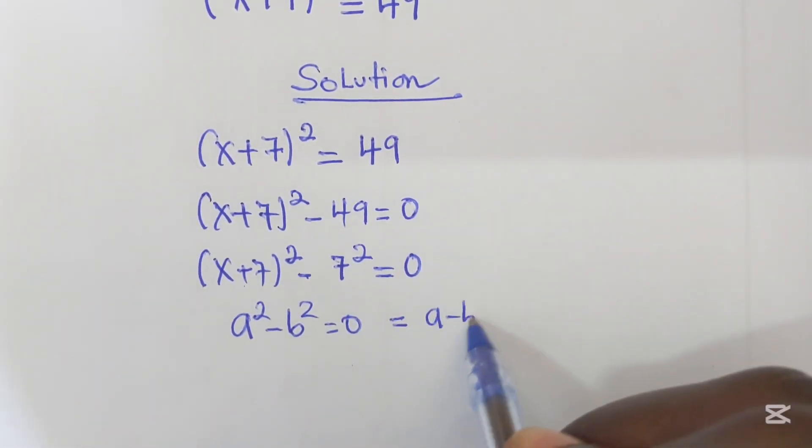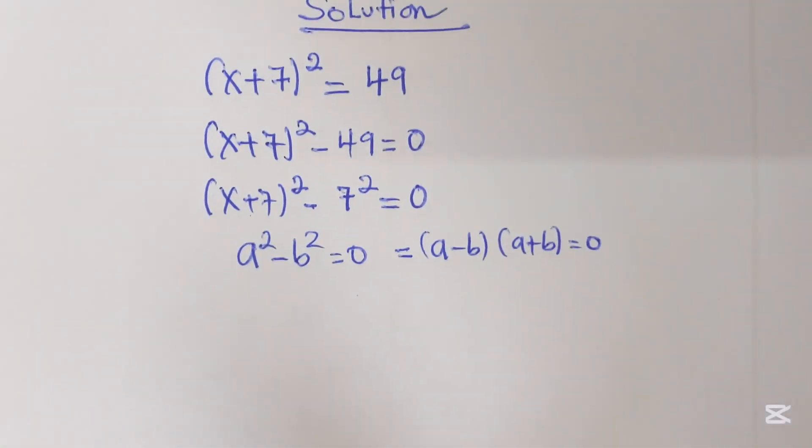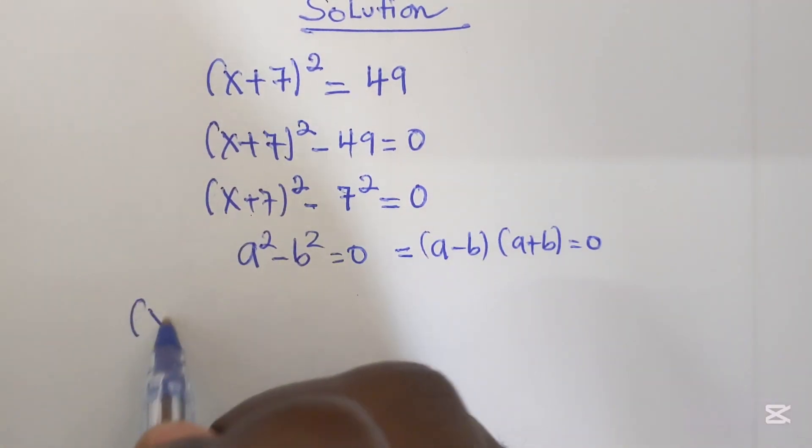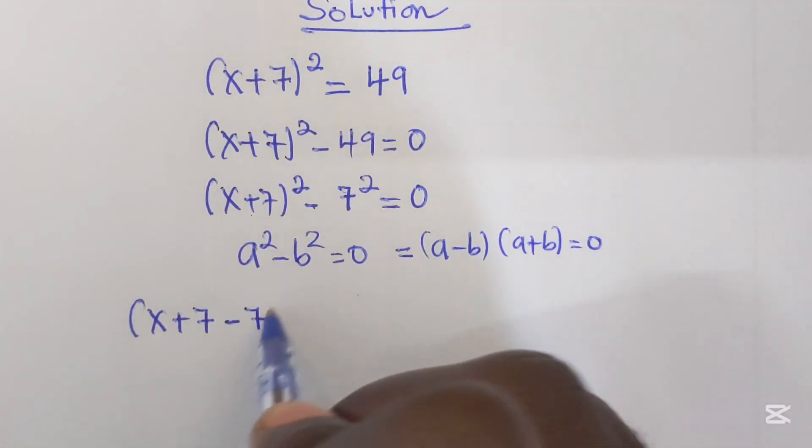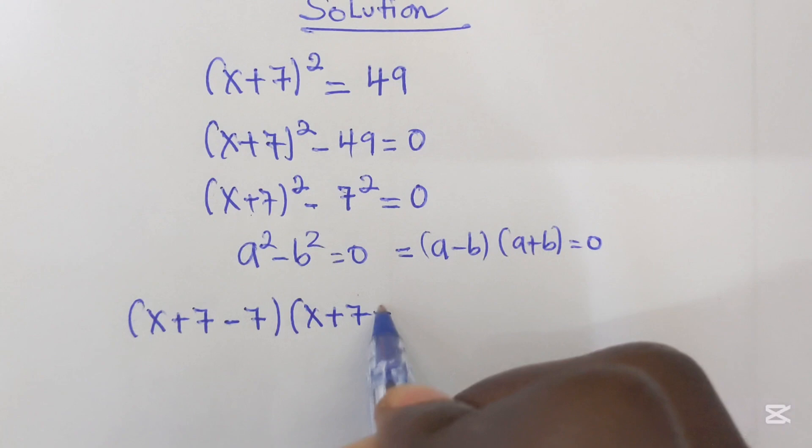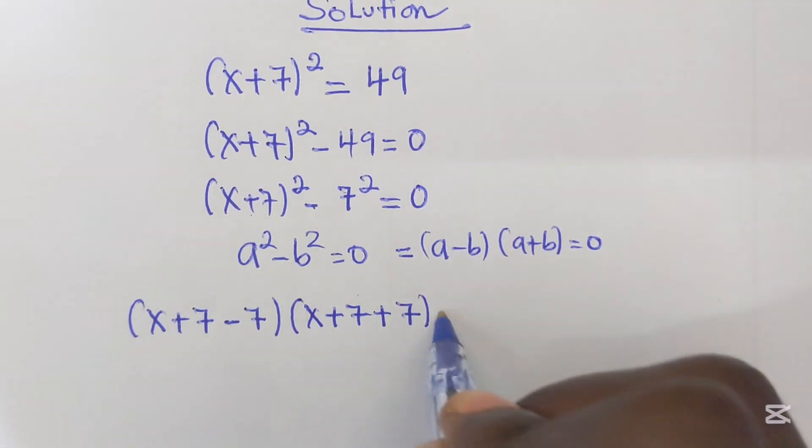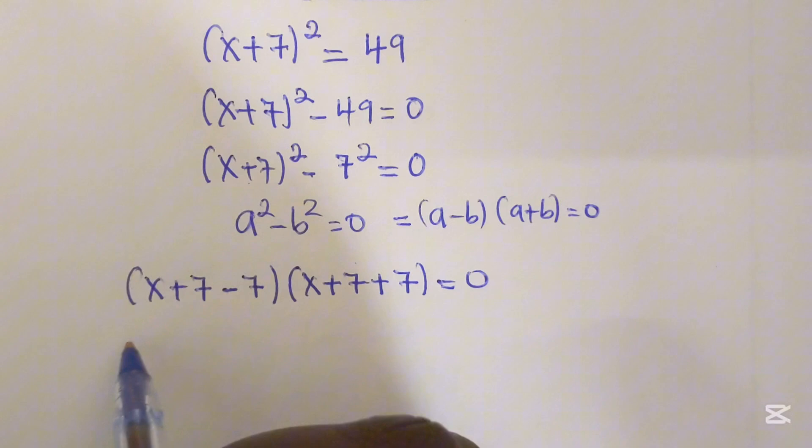Here we get (x+7-7)(x+7+7) = 0. So here we get (x+0)(x+14) = 0.